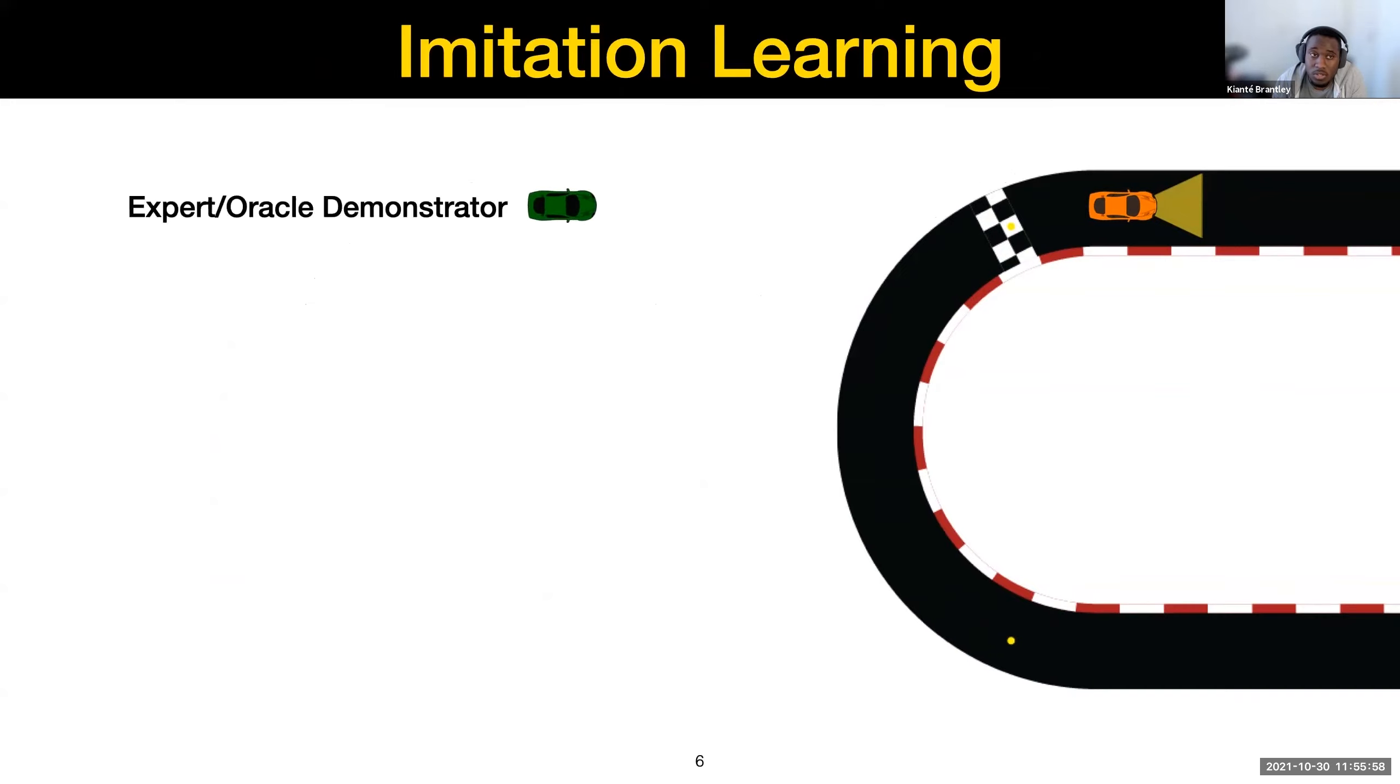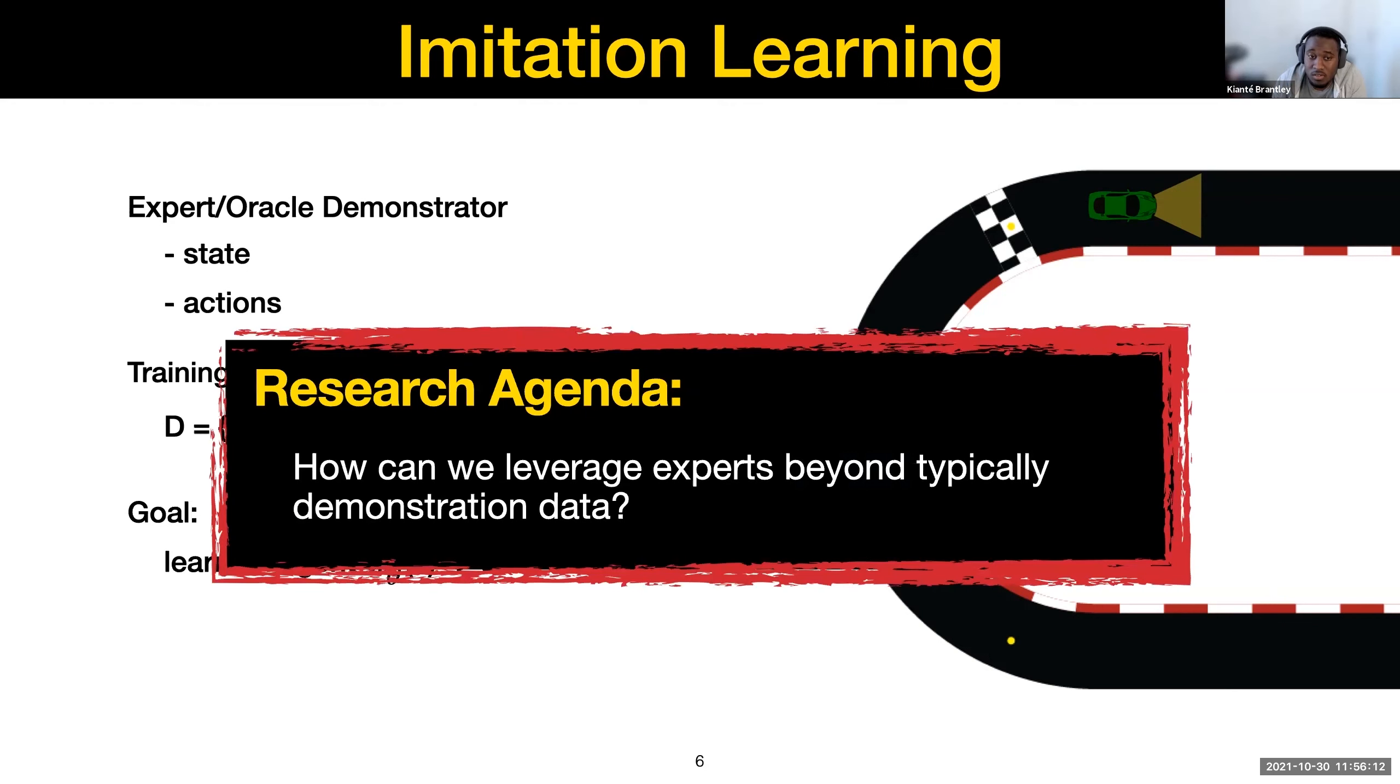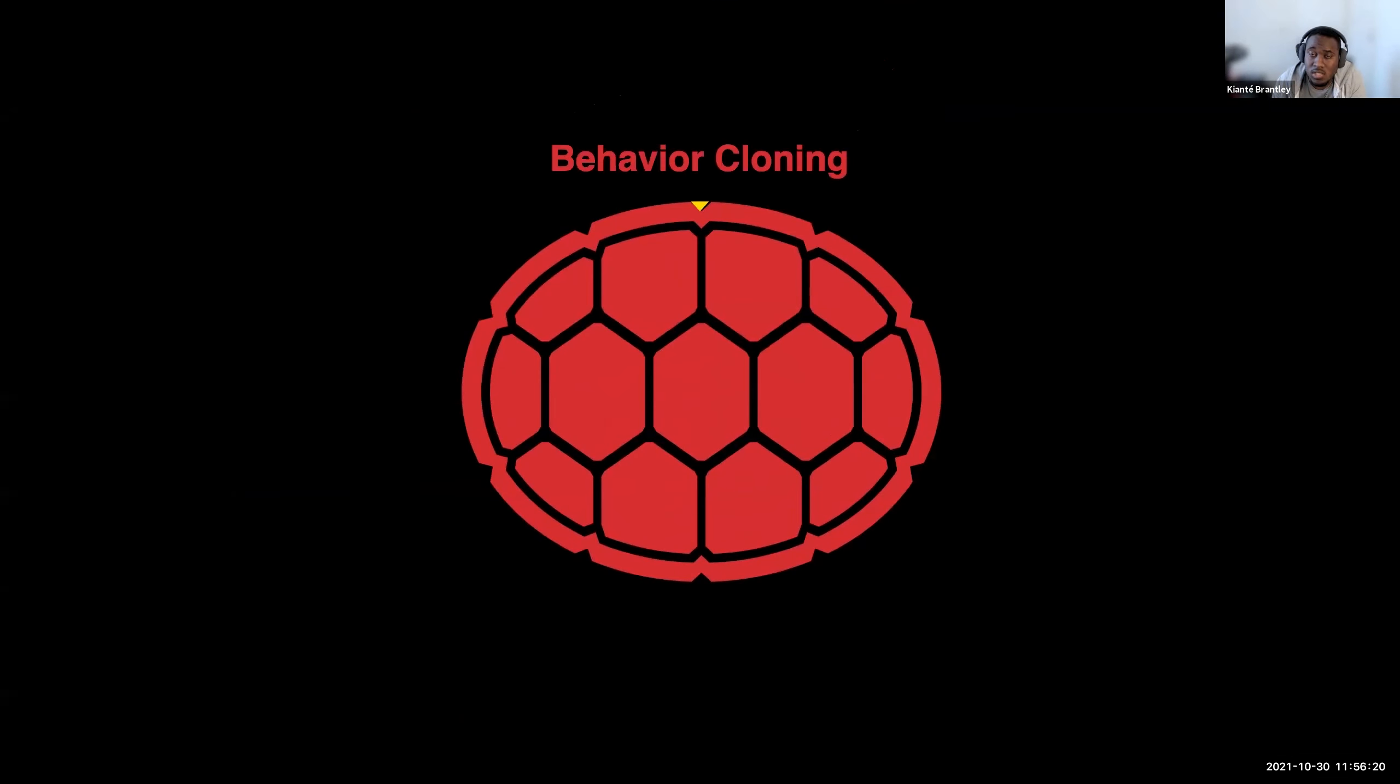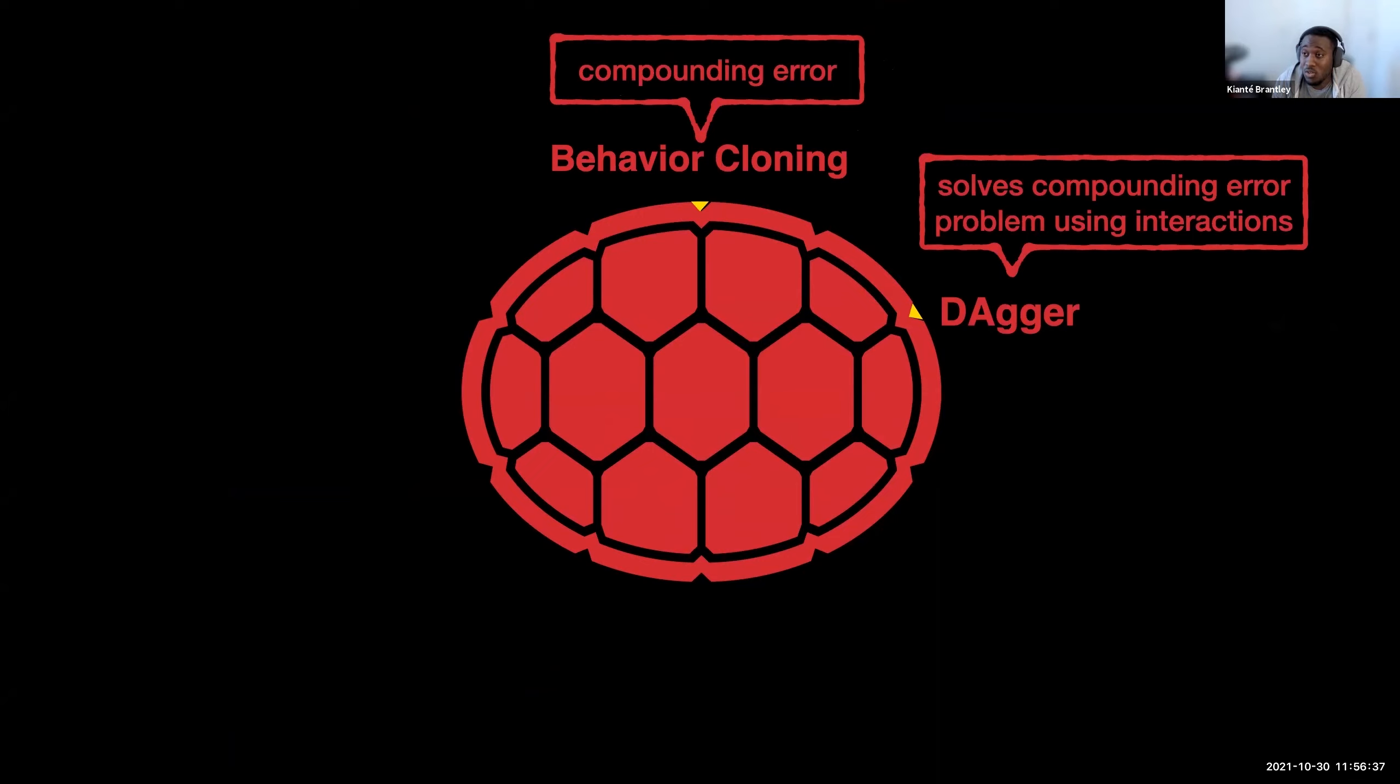So in imitation learning, typically we're given an expert or oracle demonstrator states and actions. So given this training set consisting of the state and actions from the expert, the goal is to learn the agent to match from the expert states to the expert actions. So broadly, my research agenda is how can we leverage experts beyond typical demonstration data? In imitation learning, the first algorithm introduced in the setting is called behavioral cloning. But it's known in theory that it suffers from something called the compounding error problem. And there's been a new algorithm introduced to solve this issue called dagger that solves it using interactions.